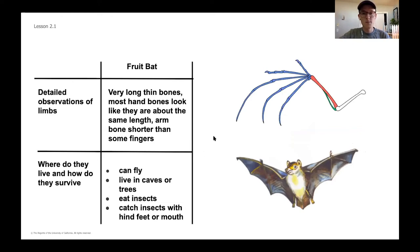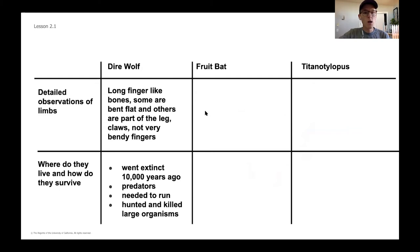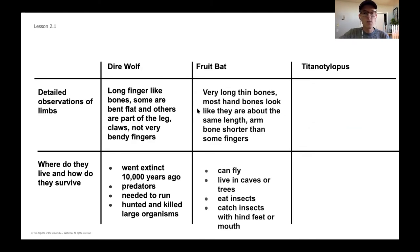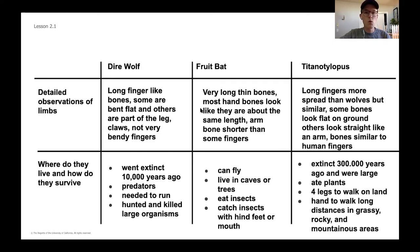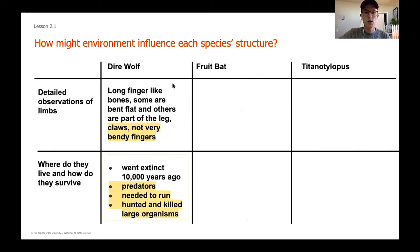You can also do the same for where they lived and how they survived. Mine isn't necessarily perfect — there might be some information that isn't super helpful, but there might also be something you missed that you want to get down for your notes. We'll click through these slides and you can feel free to pause and add any notes. What we're going to be thinking about is how might the environment influence each species' structure — specifically for the fruit bat and the titanolophus and how their structure is influenced by where they live and what they need to survive.